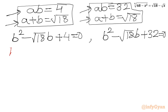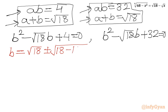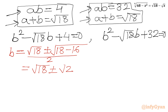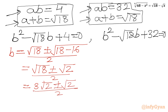Solving the first quadratic using the quadratic formula: b equals (root 18 plus or minus square root of (18 minus 16)) over 2, which is (root 18 plus or minus root 2) over 2. Since root 18 equals 3 root 2, this becomes (3 root 2 plus or minus root 2) over 2.